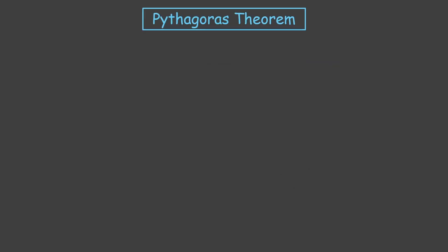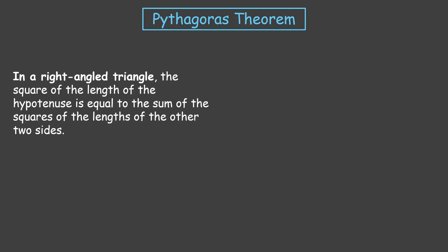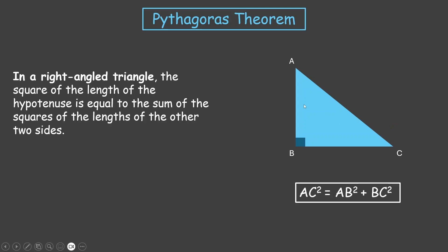Hello everyone, let us recall Pythagoras theorem. Pythagoras says that in a right-angled triangle, the square of the length of the hypotenuse is equal to the sum of the squares of the lengths of the other two sides. That is, if we have a triangle ABC right-angled at B, then AC² equals AB² plus BC².